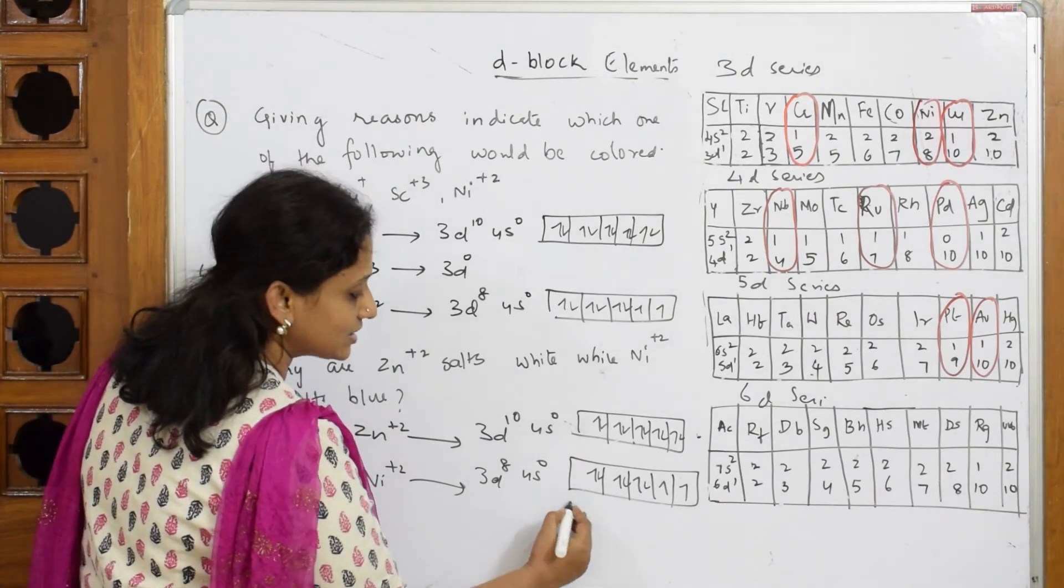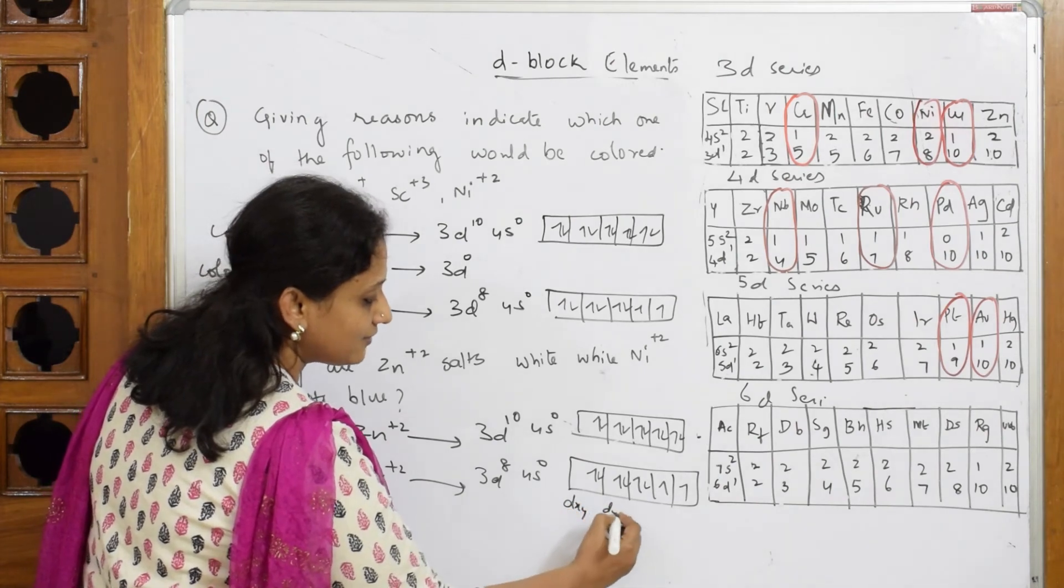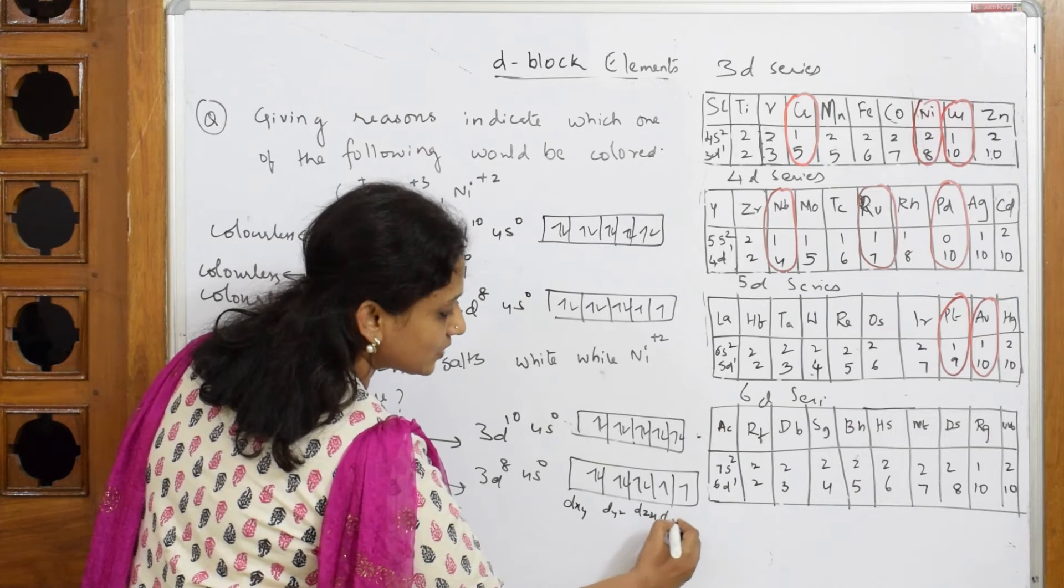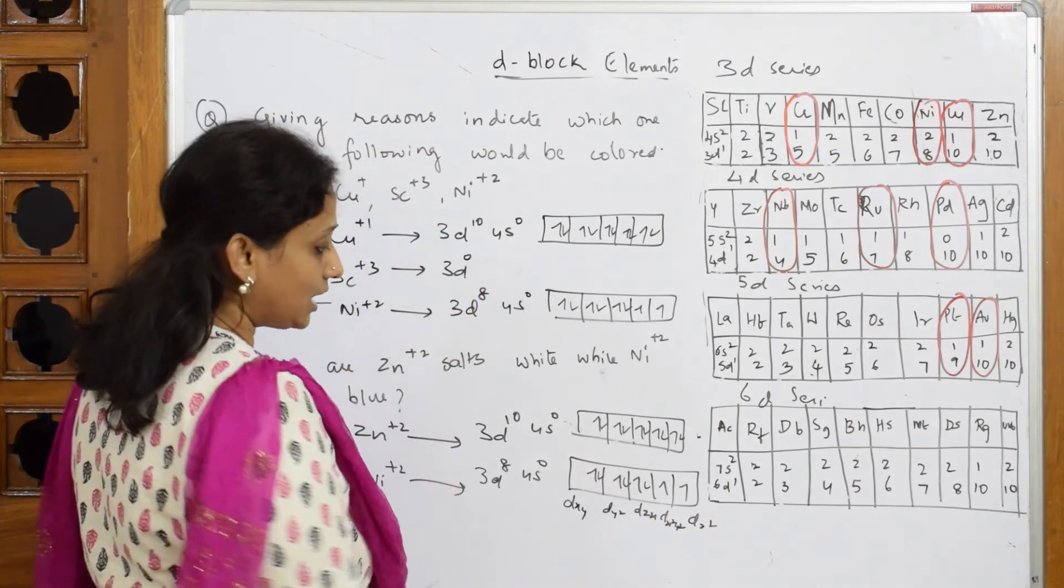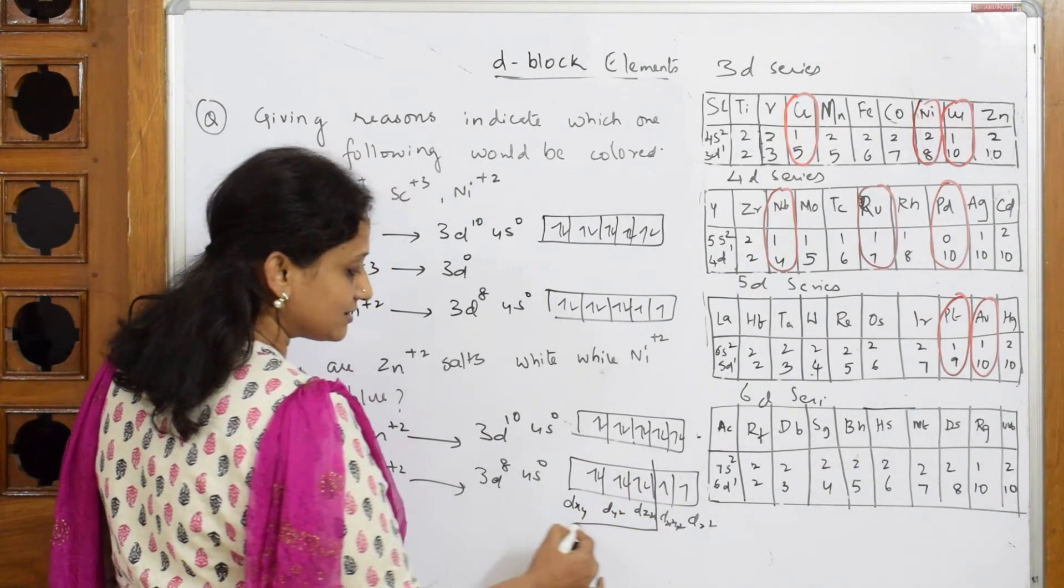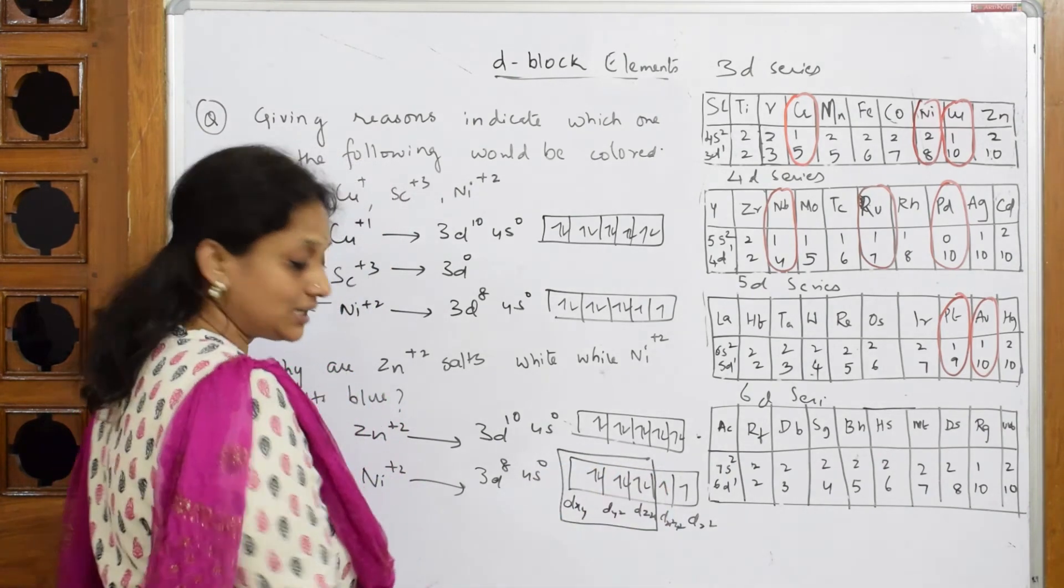The first one is called dxy, dyz, dzx. Next one: dx²-y², dz². Now this dxy, yz, zx - this set, this whole set is called t2g set: triplet degenerate set.